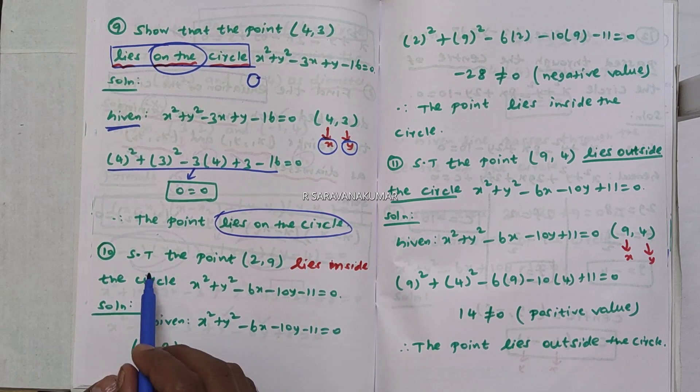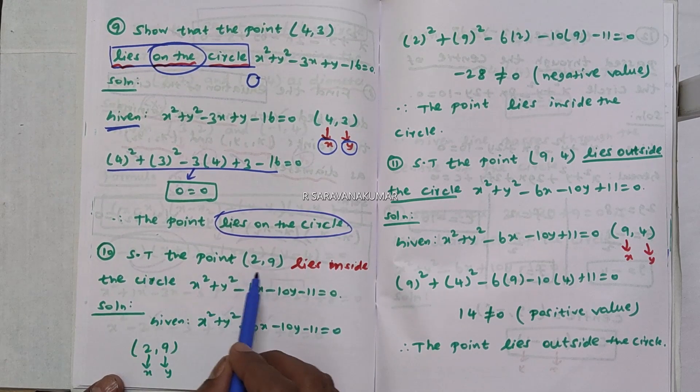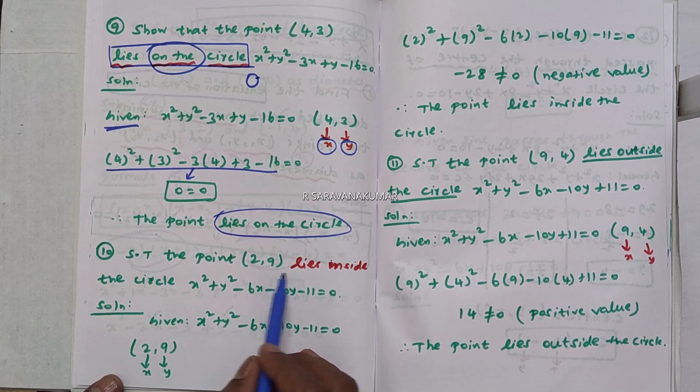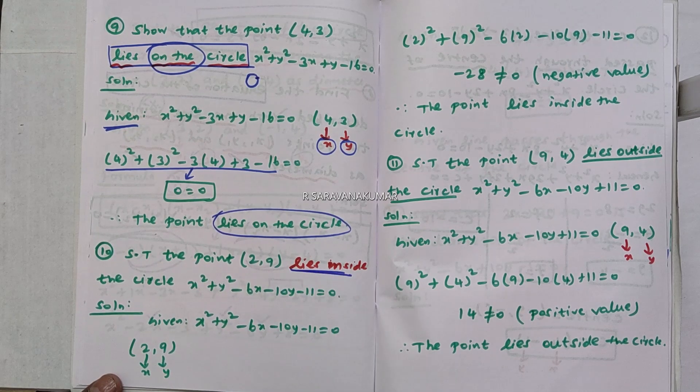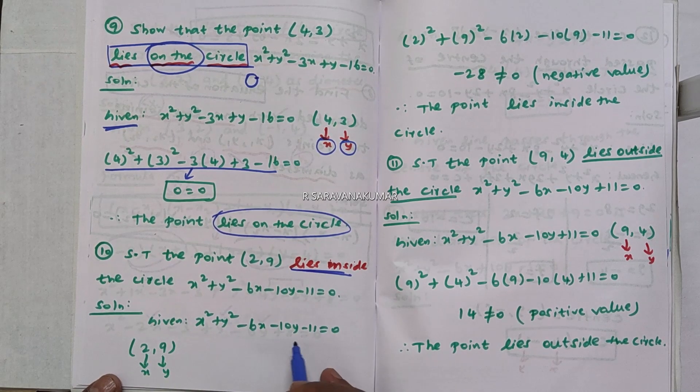Show that the point (2, 9) lies inside the circle. We substitute the given point into the circle equation.